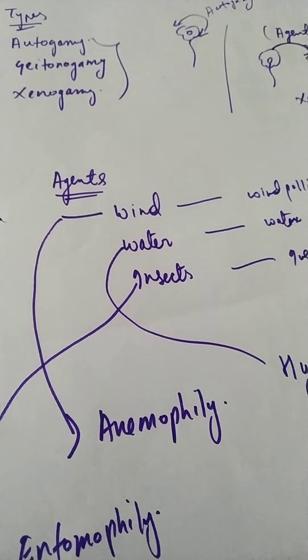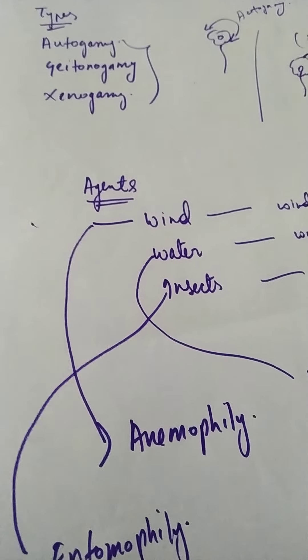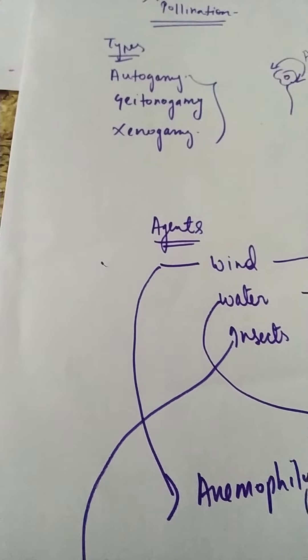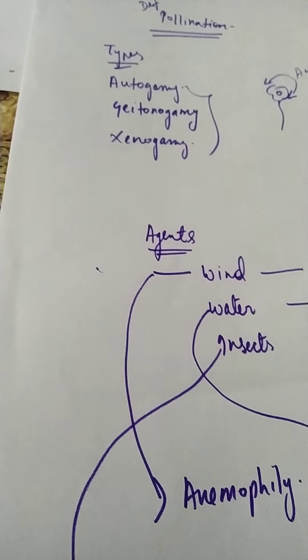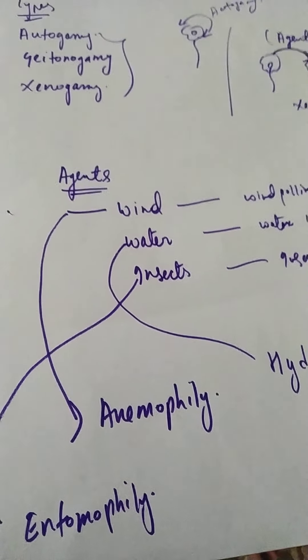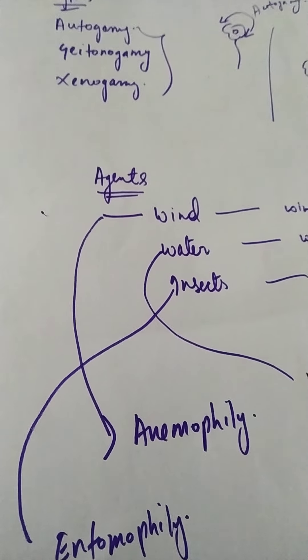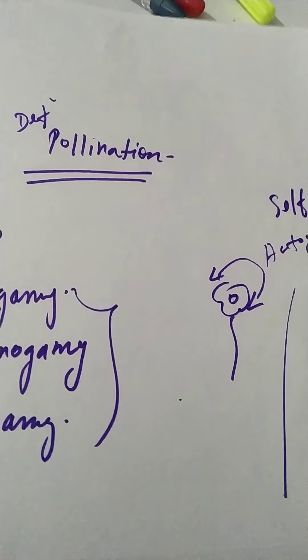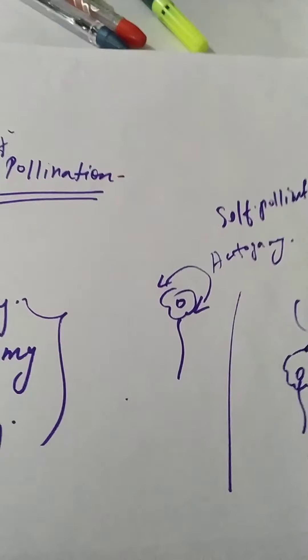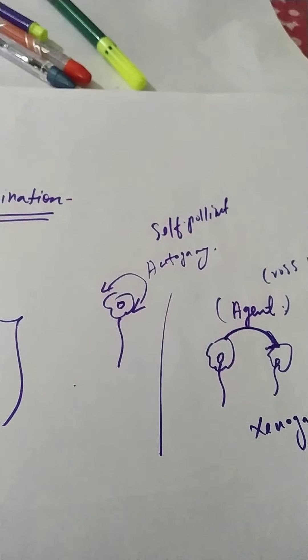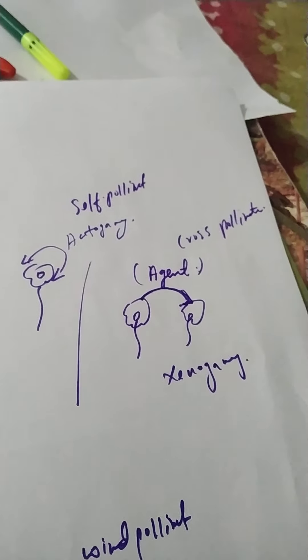Their characteristics are also different, which I will explain later. The important things you have to know are pollination agents and also the difference between self-pollination and cross-pollination.